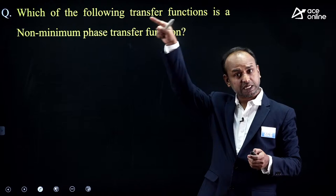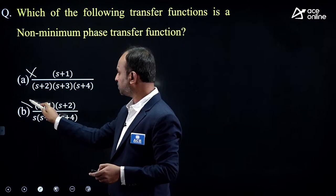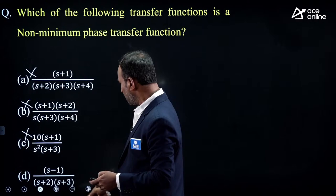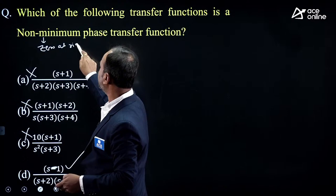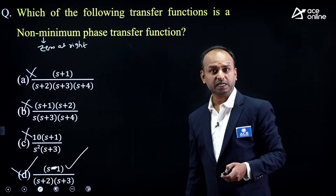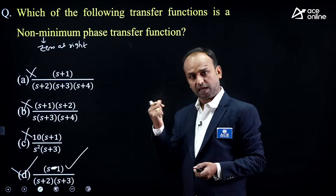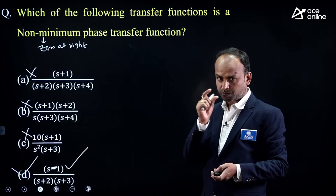Non-minimum phase system question: which transfer function has a zero on the right side? S−1 = 0 → S = +1 (right side zero). That is a non-minimum phase system. Option D is correct. Minimum phase: all poles and zeros on left side. Non-minimum phase: at least one zero on right side. All-pass system: zeros on right side symmetrical with poles on left side.